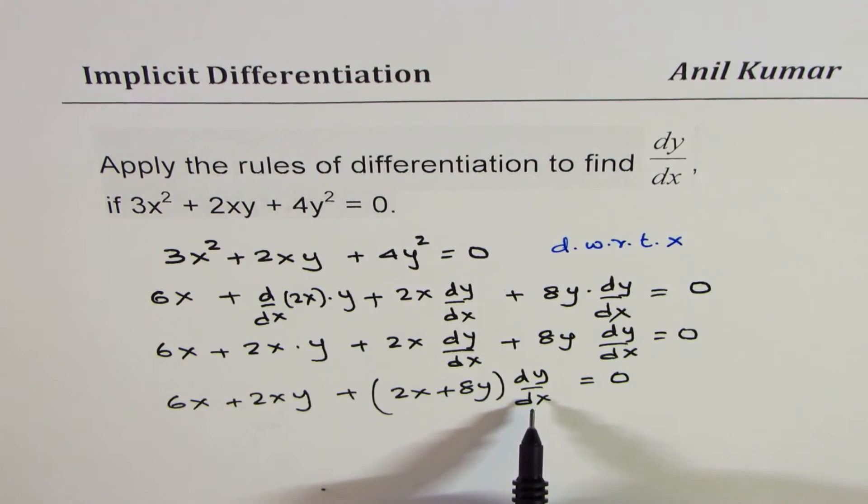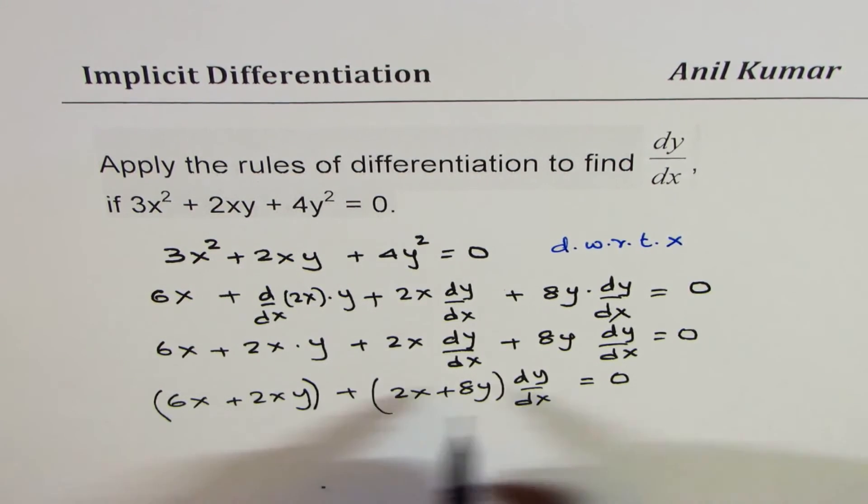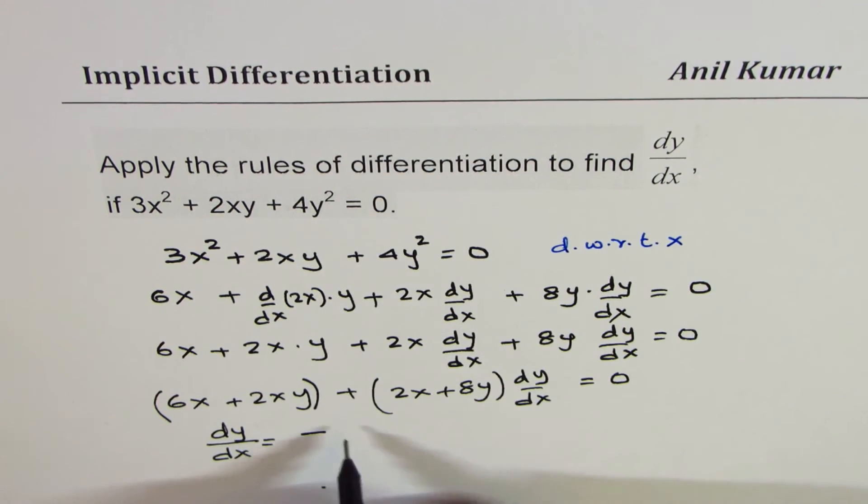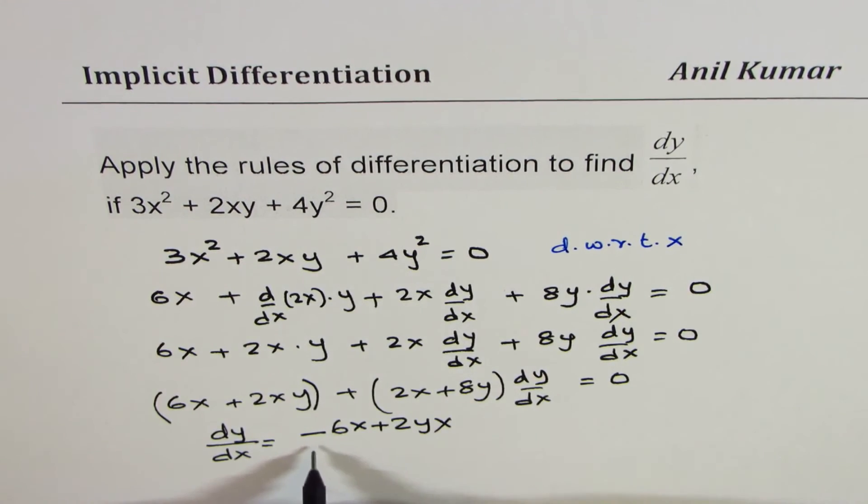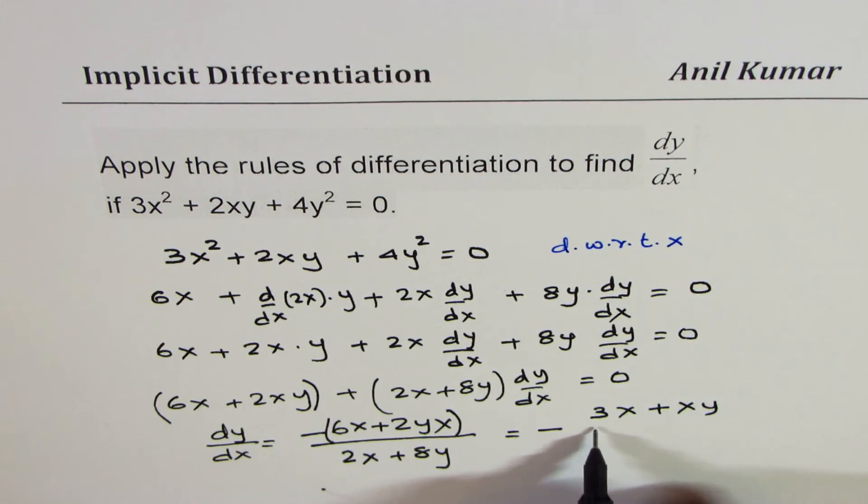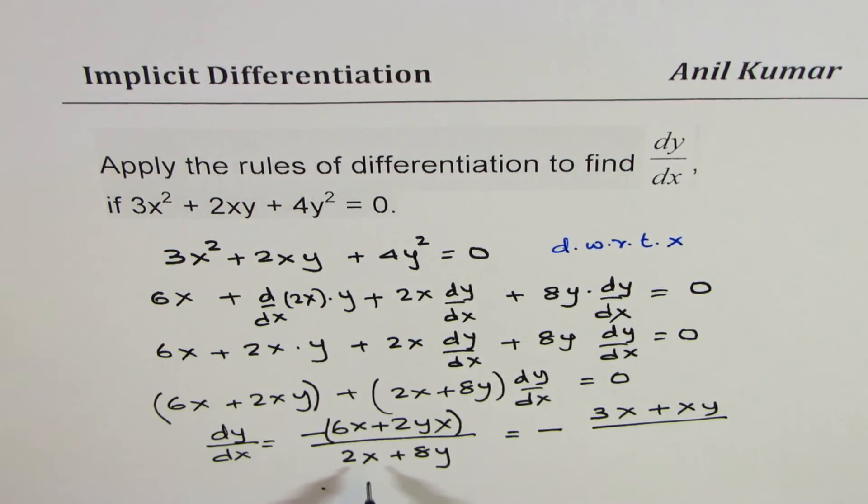Now dy/dx can be isolated. So we could take these two terms to the right and divide by 2x plus 8y. Now of course it can be simplified later since 2 is common in both. So we can write dy/dx as equal to, when I take these two terms to the right, I get negative 6x plus 2xy divided by 2x plus 8y. You can take two as a common factor in both numerator and denominator and write this as negative 3x plus xy over, in the denominator, we get x plus 4y.